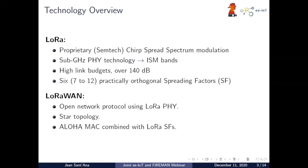The most interesting thing about this technology is practically orthogonal spreading factors. For example, if two different devices are transmitting on different spreading factors, a receiver can decode both messages at the same time. On top of that, we have LoRaWAN, which is an open network protocol that uses the LoRa physical layer. This network works on a star-of-stars topology with few base stations serving a huge number of devices that communicate to the base station, which then communicates to the network server. The MAC layer uses Aloha combined with LoRa spreading factors, so devices transmit whenever they need to without any signaling, cooperation, or synchronization.